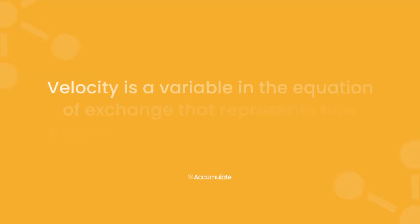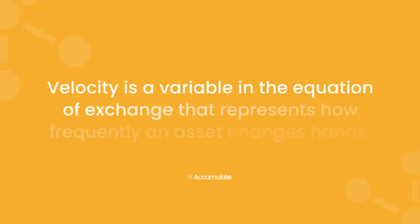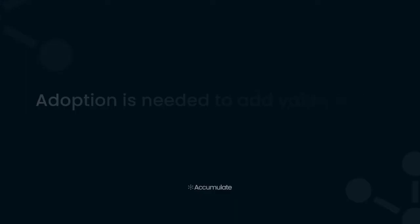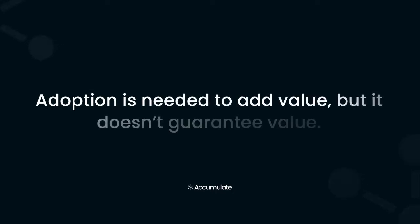Velocity is a variable in the equation of exchange that represents how frequently an asset changes hands. One incorrect but reasonable assumption many people make is that the value of a token required to pay for a product or service is directly proportional to the quantity of products or services sold on a platform. In other words, people expect that price will scale with adoption. While it is true that adoption is needed to add value, it does not guarantee value.